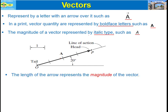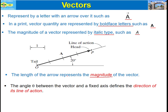Let us take an example. This is vector A. The length of the arrow, meaning from point O to point B, represents the magnitude of the vector. The angle theta between the vector and a fixed axis defines the direction of the line of action. For example, in this figure, 20 degrees represents the direction of action of vector A.